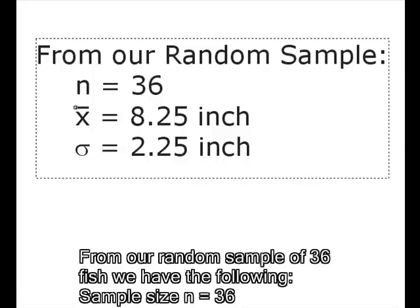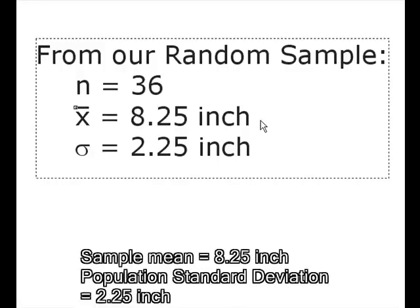From a random sample of 36 fish, we have the following: a sample size of 36, a sample mean of 8.25 inches, and a population standard deviation of 2.25 inches.